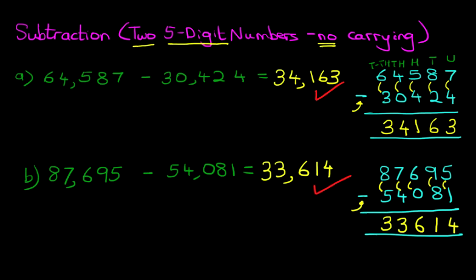And that is correct. With a bit of practice, you'll be able to do this without converting this into the vertical format. So that is how we subtract two five-digit numbers with no carrying.